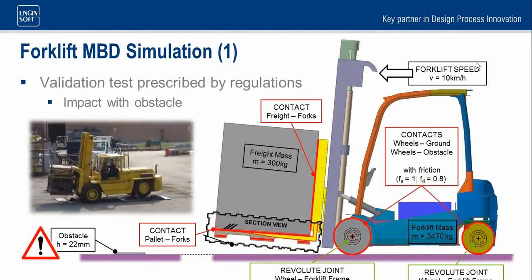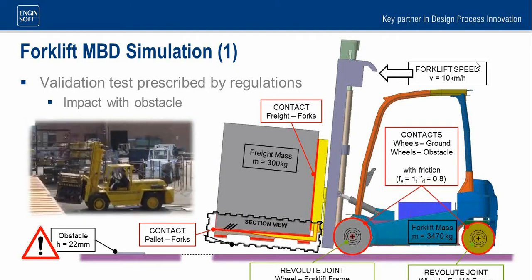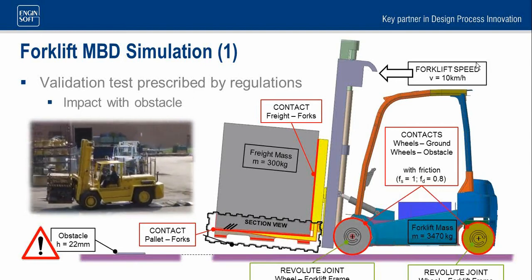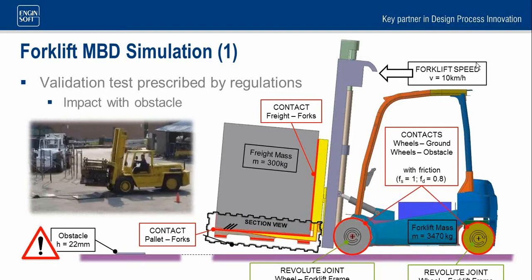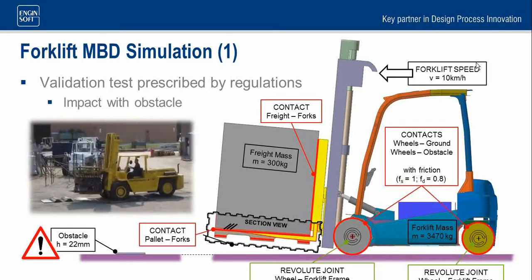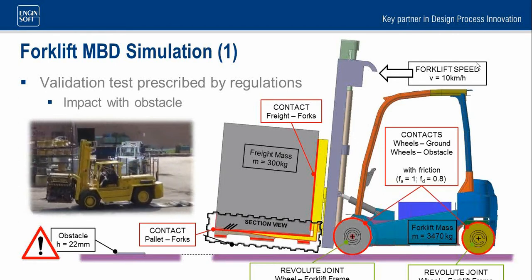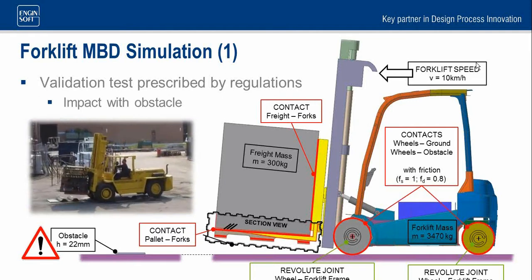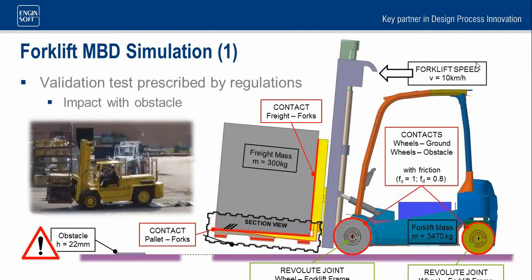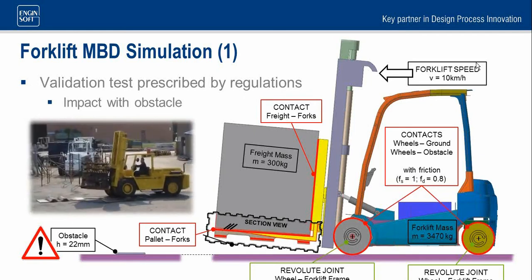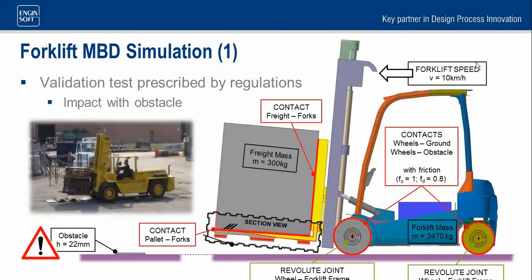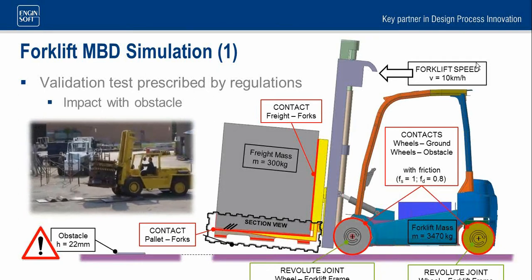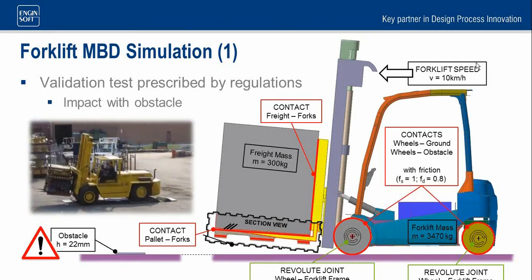As you can see from this video, an obstacle can seriously compromise the stability of a forklift and also the integrity of the carried freight. This test is essential for the validation of a forklift prototype. With RecurDyn, we can perfectly reproduce this test, and this is why we have built the model you can see here. This forklift has been represented with rigid bodies interacting with contact features. A set of contact features has been created between the forks and the pallet so that the freight is free to move based on the forklift dynamics.